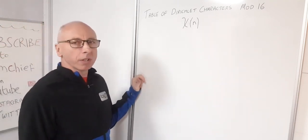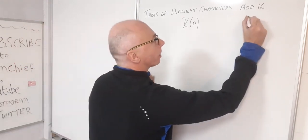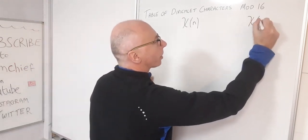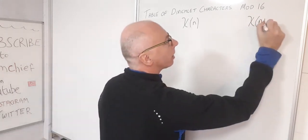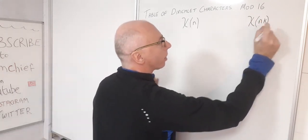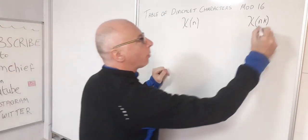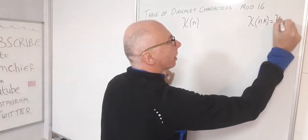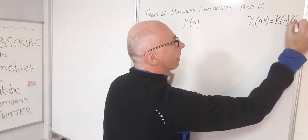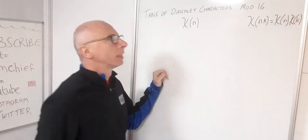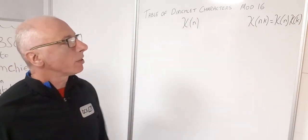The function is completely multiplicative, so chi of a compound number — for example chi of n times k — would be the same as chi of n times chi of k. You can split it apart by that, which is really helpful when building up our table.